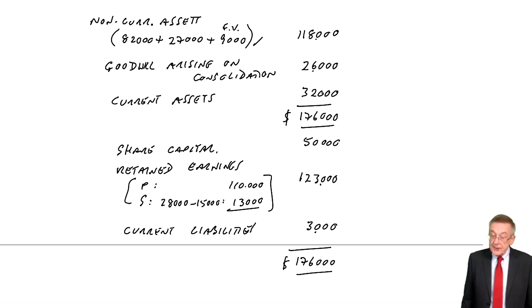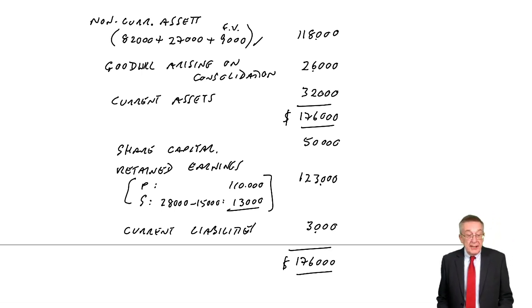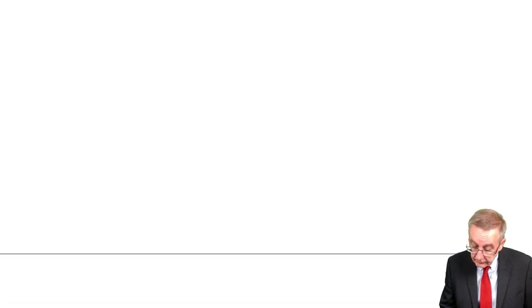Just one more example in this chapter — nothing new, just to check you've got it. Look at example 4. It's exactly the same problem, just different figures. P acquired 100% of the share capital of S on the 1st of July 2004 for £25,000. Look at P's statement of financial position — the investment in shares they bought will appear at the amount we paid: £25,000.